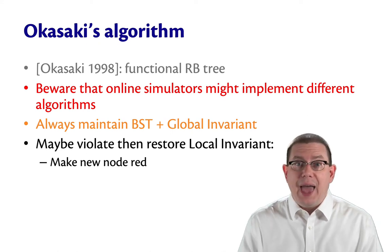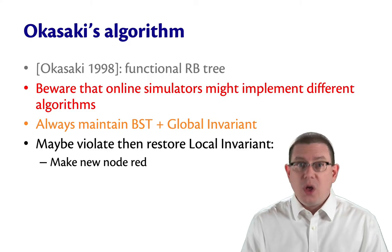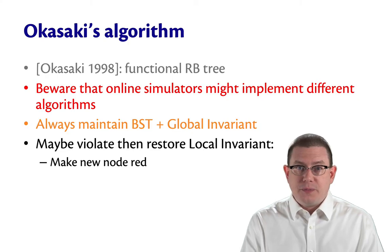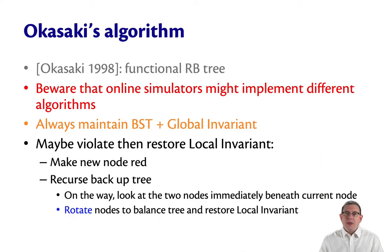So we'll go ahead and make the new node red always, even though that might cause a local invariant violation. Then we will recurse our way back up the tree, after putting in that new node and making it red.